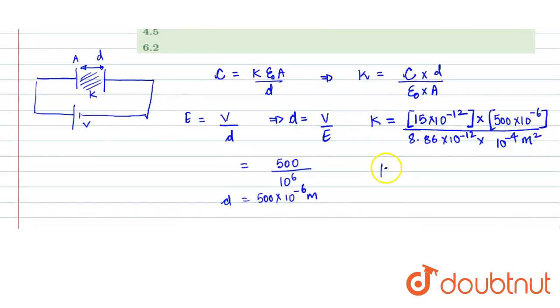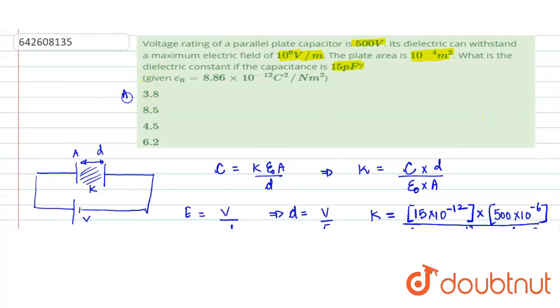This is what the value of K is. On solving we will get K value as 8.5, which is given to us in option B. I hope this helps you with the answer.